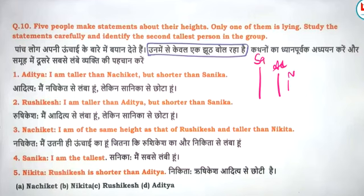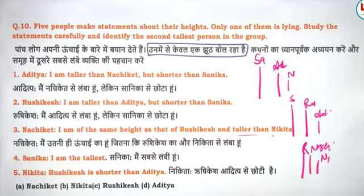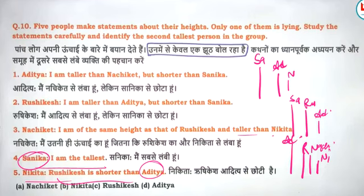Sanika says: I am the tallest. Natchiket says: I am of the same height as Rishiket and taller than Nikita. Nikita says: Rishiket is shorter than Aditya. Now, only one statement is wrong — let's analyze which one is the lie.